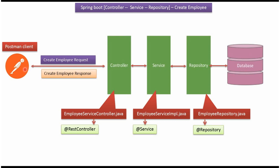Here you can see a Postman client which sends a Create Employee request to the Controller layer. Then the request goes to the Service layer, then to the Repository layer. The Repository layer inserts the employee record into the Employee table in the database, and the Create Employee response goes back to the Postman client.